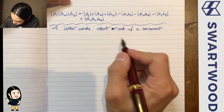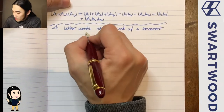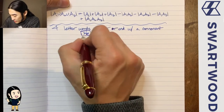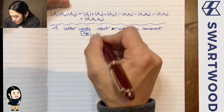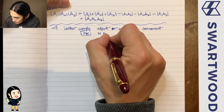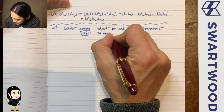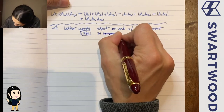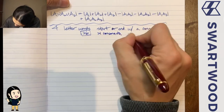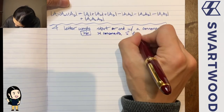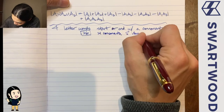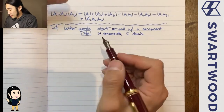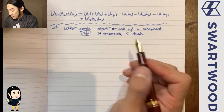We're talking English here, so there are 26 letters — 21 consonants and 5 vowels. There are many different ways to do this, but let's practice PIE.